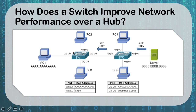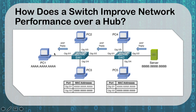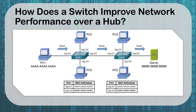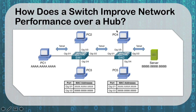Now both switches have learned where A and B are. Next time communication goes from A to B or B to A, the switch sends it directly to the second switch because it already knows that's where B is. This means PCs 2, 3, 4, and 5 are not bothered by that traffic at all. If these were hubs, all this traffic would be going to every computer on the network. That's why having collision domains shortened down based on MAC tables is so important.